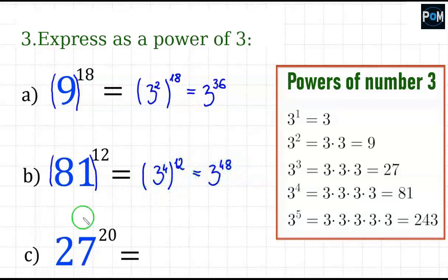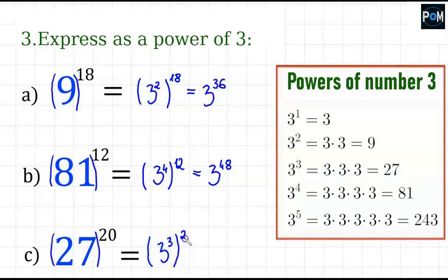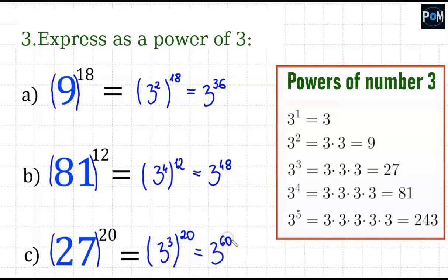In example C there's the number 27. We look at the table — 27 is 3 to the power of 3. So instead of 27, in the brackets I put 3 to the 3rd power, raised to the 20th power. I rewrite the 3 as the base and multiply 3 by 20, which gives me 3 to the power of 60.